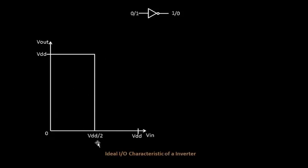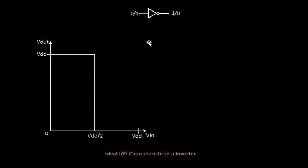At VDD/2, which is half the supply voltage, you see a switching transition happen. This is quite obvious because whenever you switch your input from 0 to 1, the PMOS and NMOS behave in different manners — we have seen that in past videos. So there is a VDD/2 crossing here. When your input is 0 your output is VDD; as you increase toward VDD, your output decreases, and when your input reaches this region your output is completely 0 because NMOS turns on and PMOS turns off.